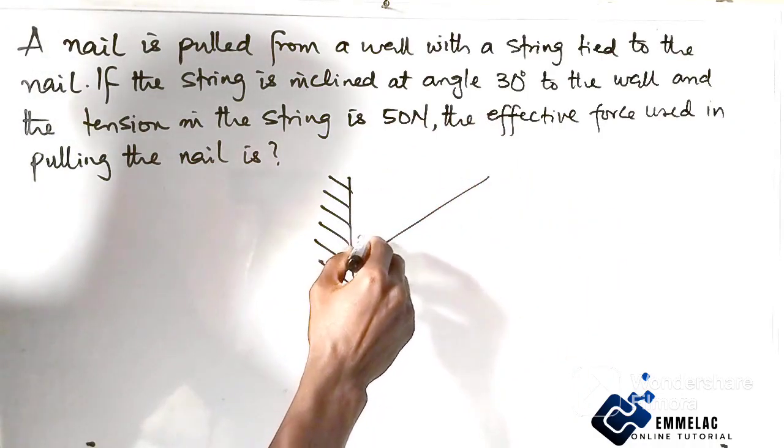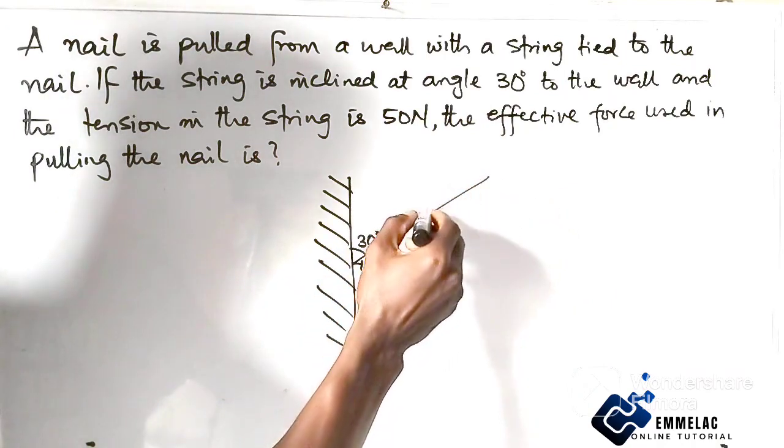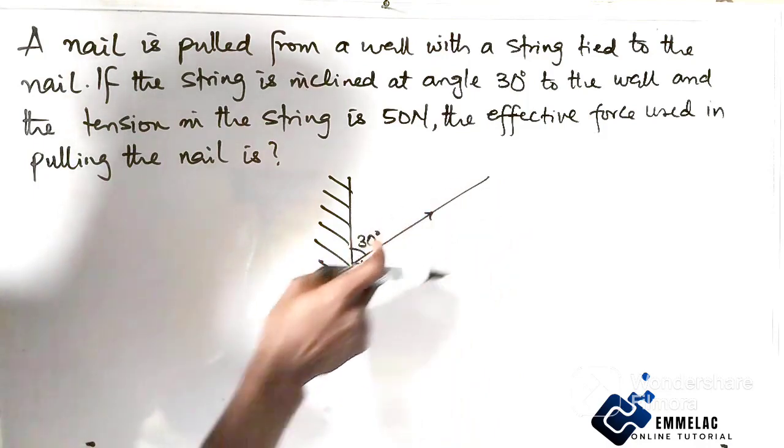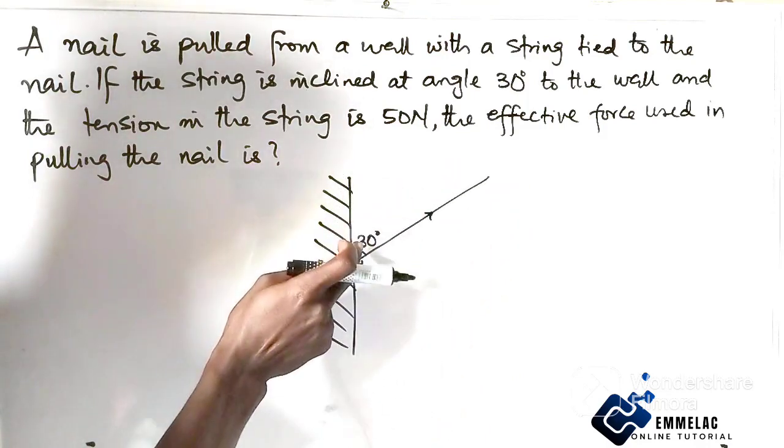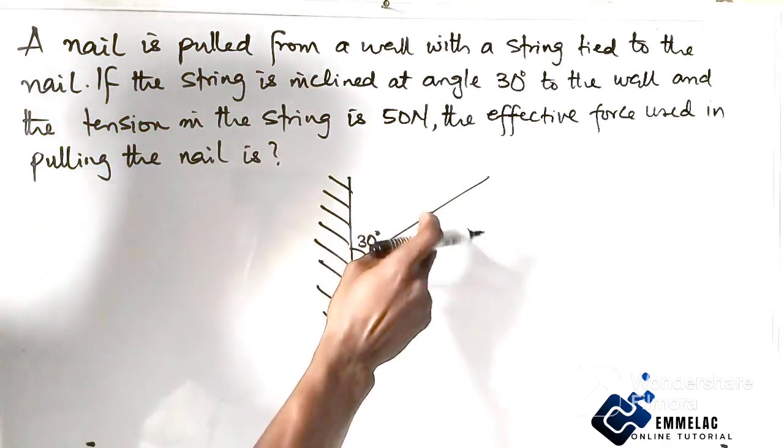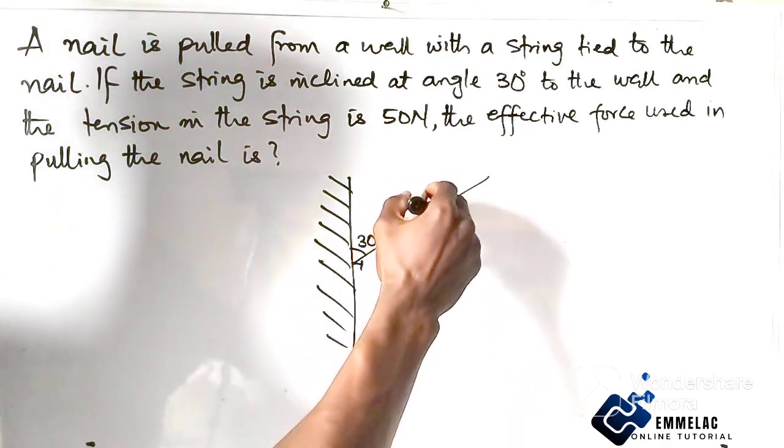This is 30 degrees, which means this rope tied to this is inclined with the wall at 30 degrees. We are told that the tension in the string, which means the force in the string, is 50 Newton.